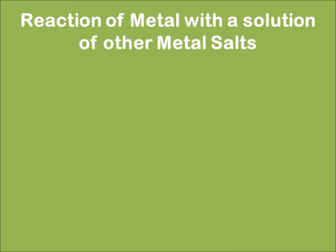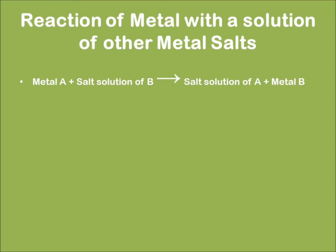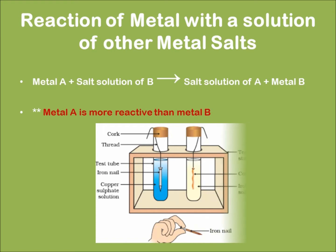Now, the reaction of a metal with a solution of other metal salts. The basic equation is a displacement reaction. Considering metal A is more reactive than metal B, as an example, an iron nail dipped in a copper sulfate solution demonstrates this displacement.